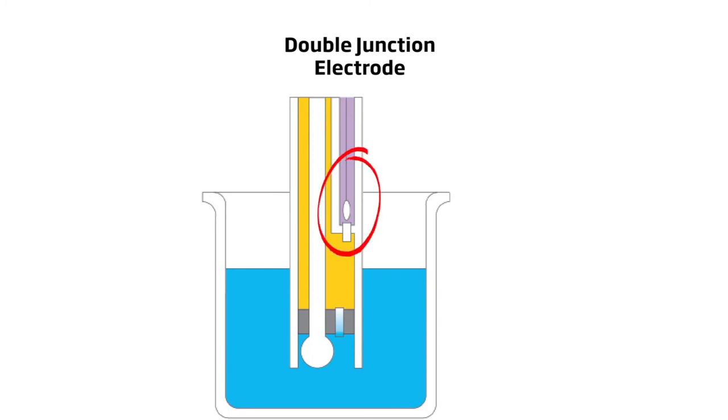The chamber that contains silver chloride houses the reference wire and is connected to the second chamber through a junction, but is not directly connected to the sample. The second chamber is directly connected to the sample and contains only 3.5 molar KCl electrolyte.